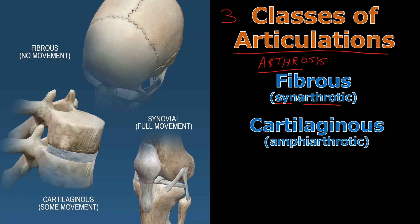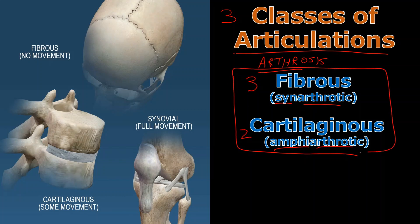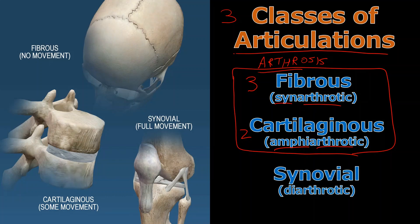The next big class is cartilaginous joints and based on the name they are made from cartilage. They are amphiarthrotic, meaning they have a little bit of flexibility — not a lot, not none, but somewhere in between with a varying degree of flexibility. In this talk I'll go over the three types of fibrous joints and the two types of cartilaginous joints. The synovial joints — the last class of articulation — I'll cover in the following video. All synovial joints are diarthrotic, meaning freely movable. So to reiterate: fibrous joints are immovable synarthrotic, cartilaginous joints are amphiarthrotic, and synovial joints are freely movable diarthrotic joints.